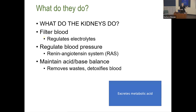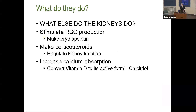Then I'm going to look at creatinine, BUN, and urine output — those help me evaluate the kidney. Remember, the kidney is responsible for the excretion of metabolic acid. Another thing the kidney does — more relevant in chronic renal failure — is it releases the hormone erythropoietin, which stimulates the manufacturing of red blood cells.